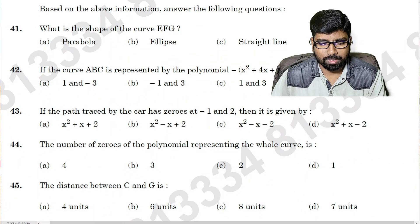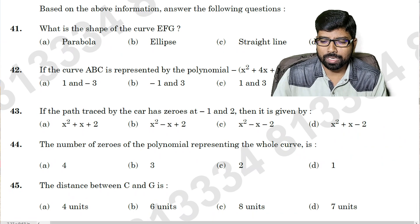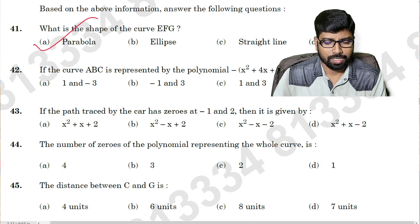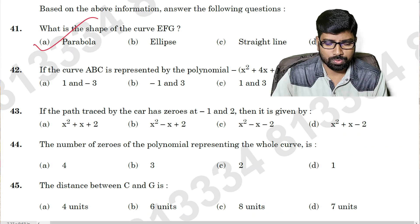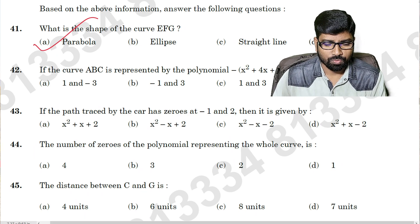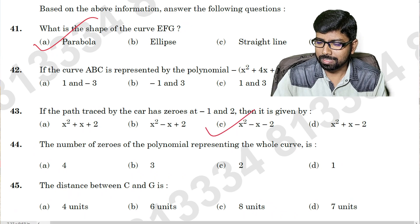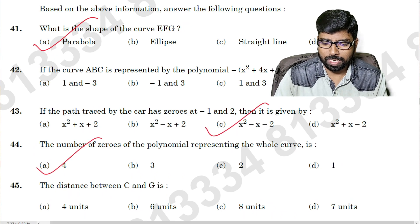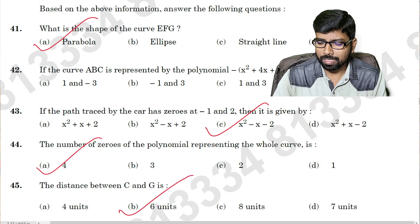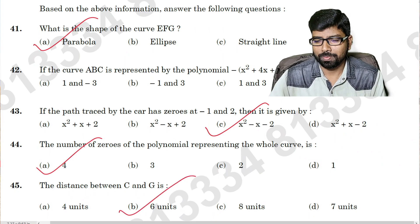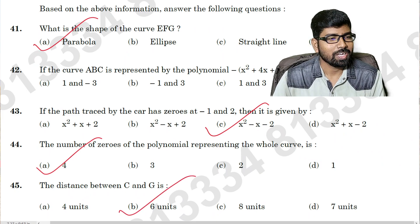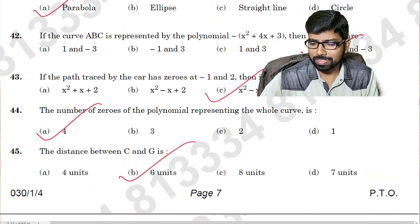Question number forty-one: option A. Question number forty-two: option D. Question number forty-three: option C. Question number forty-four: option A. Question number forty-five: option B. Very interesting — I think all of you are getting clear answers.